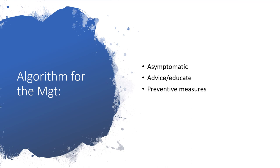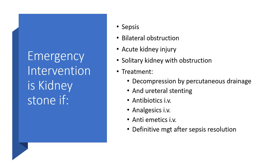The management algorithm begins by determining if you are dealing with an asymptomatic situation — in which case you advise, educate, and embark on preventive measures. There is possibility of emergency intervention when faced with sepsis and kidney stones, bilateral obstruction, acute kidney injury, or a solitary kidney with obstruction. In those emergencies, treatment involves decompression by percutaneous drainage and ureteral stenting, intravenous antibiotics, intravenous analgesia, and intravenous anti-emetics. Definitive management starts after sepsis resolution.